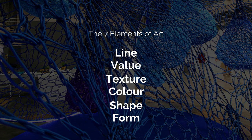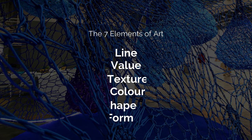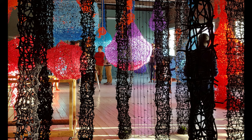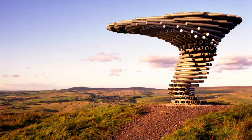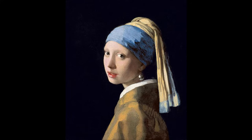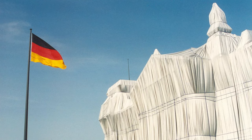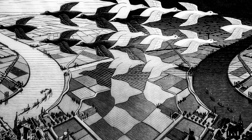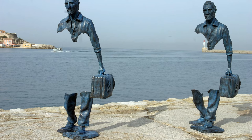Space is one of the seven elements of art, along with line, value, texture, color, shape and form. Space is the area in which an artwork is organized. Space is always a part of an artwork, but sometimes in multiple ways. When people refer to space in an artwork, they could be referring to various aspects, such as the actual place the artwork is exhibited or created, or the negative and positive space of the artwork.